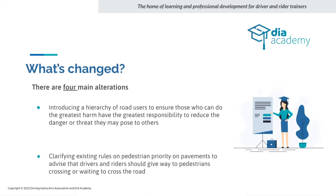Clarifying the existing rules on pedestrians: priority on pavements advises drivers and riders should give way to pedestrians crossing or waiting to cross. Pedestrians now, according to the Highway Code, includes disabled carts and buggies — Class 2 and Class 3 wheeled and four-wheel buggies that go on the pavements. They are classed as pedestrians, so we need to know that.